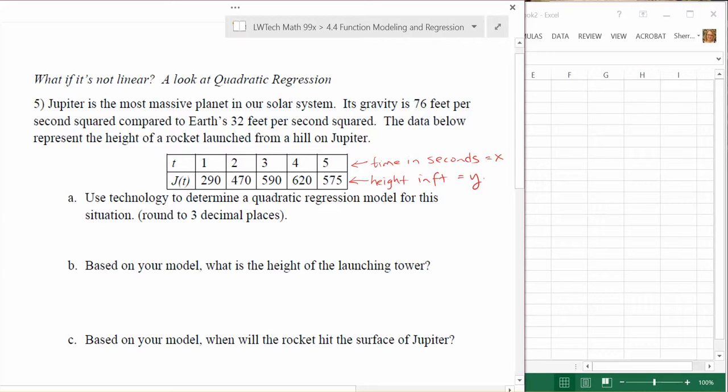The next question asks us to use technology to determine a quadratic regression model for this situation. Notice a couple of pieces of important wording here. We see the word regression. Regression is a process where we take the data points and come up with an equation that's the best fit for it. In this particular case, we want a quadratic equation that is going to be the best fit.